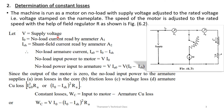Now, let V be the supply voltage. I₀ is the no-load current read by ammeter A1. I_SH is the shunt field current read by ammeter A2. Therefore, the no-load armature current is I₀ minus I_SH.